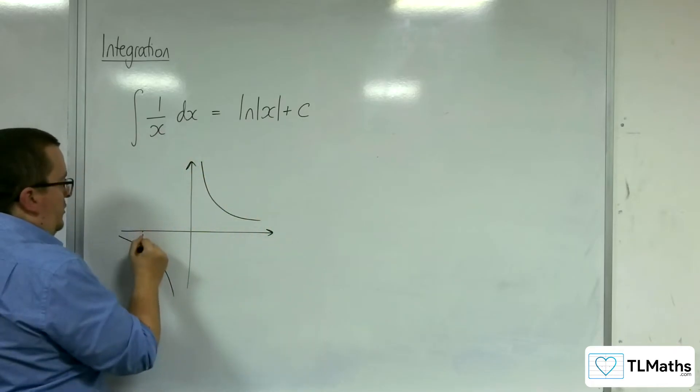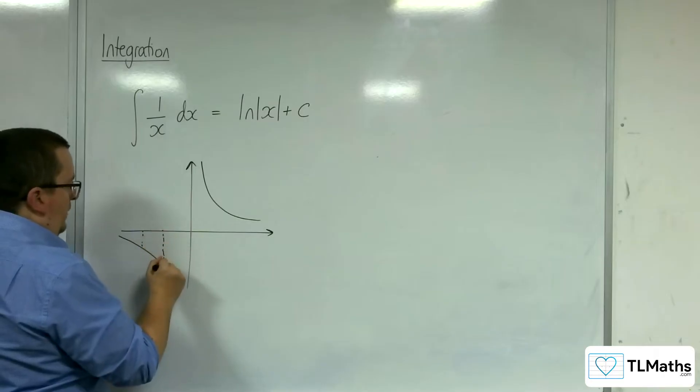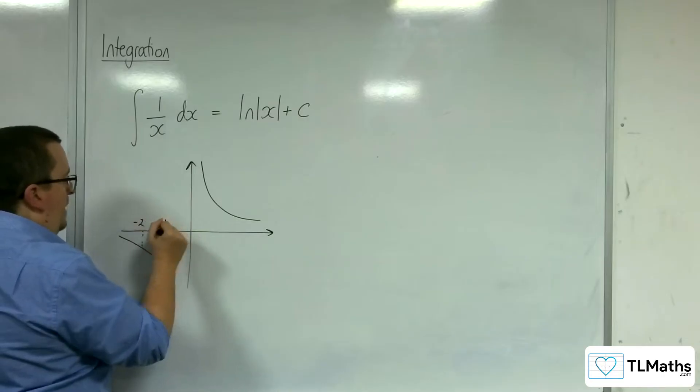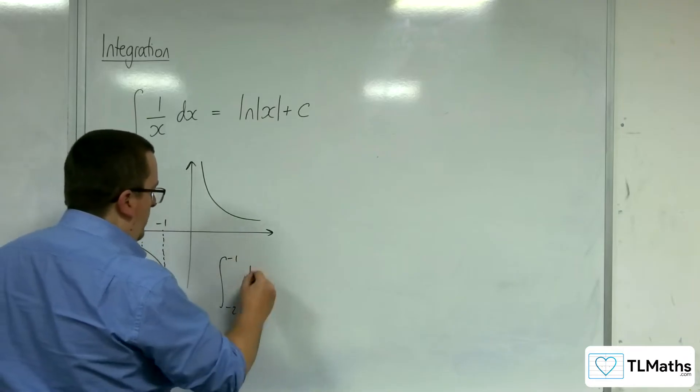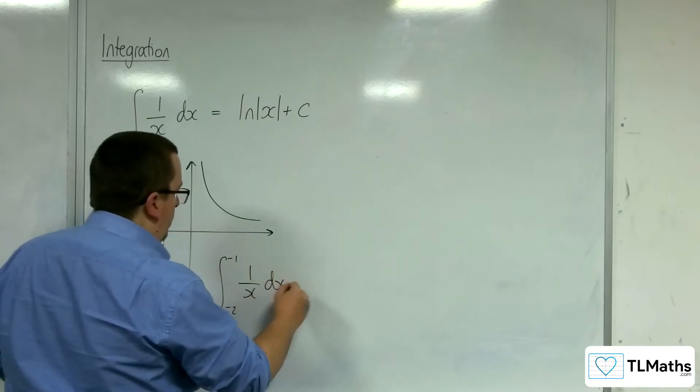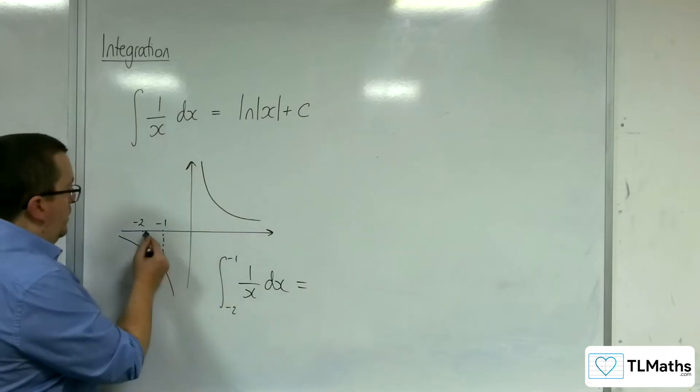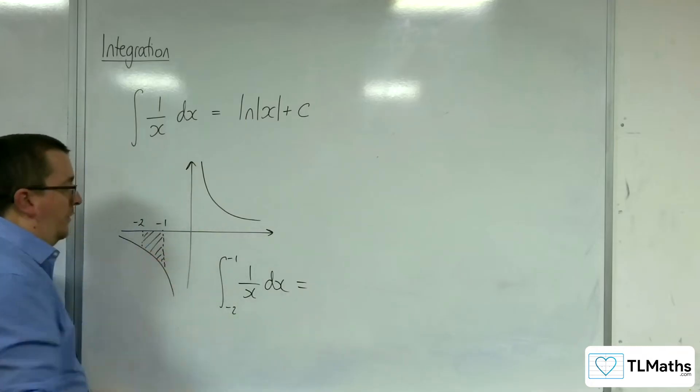And let's say you wanted to integrate 1 over x between minus 2 and minus 1. So integrating between minus 2 and minus 1, 1 over x dx, which seems like a perfectly legitimate thing to do. We want to work out what that area is, for example.